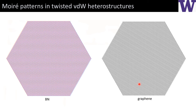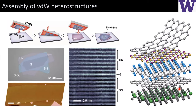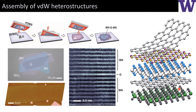It surprises me because boron and nitrogen together have basically the same valence electron density as graphene, and most scattering techniques measure electron density. So it's really surprising you can see the difference between graphene and boron nitride. I'm not an electron microscopist either, so I don't know. That's something I've never thought of before, and I'll try to dig into this and find out why. That's a really good question.